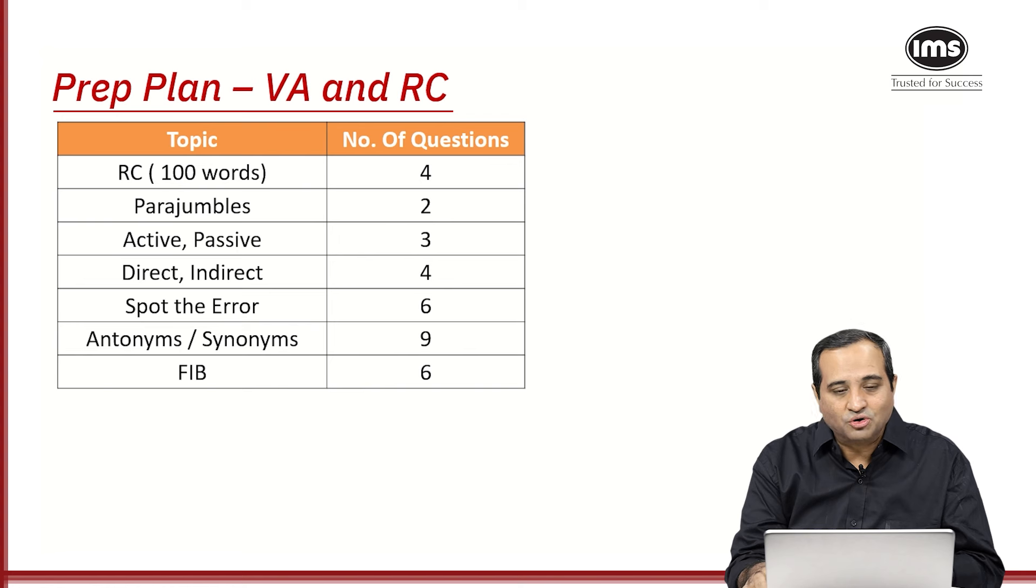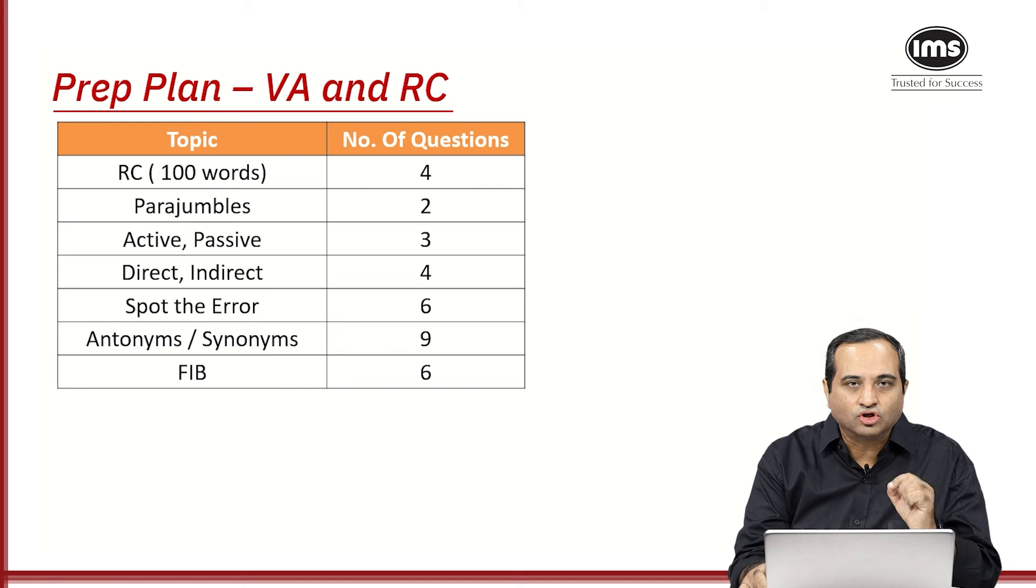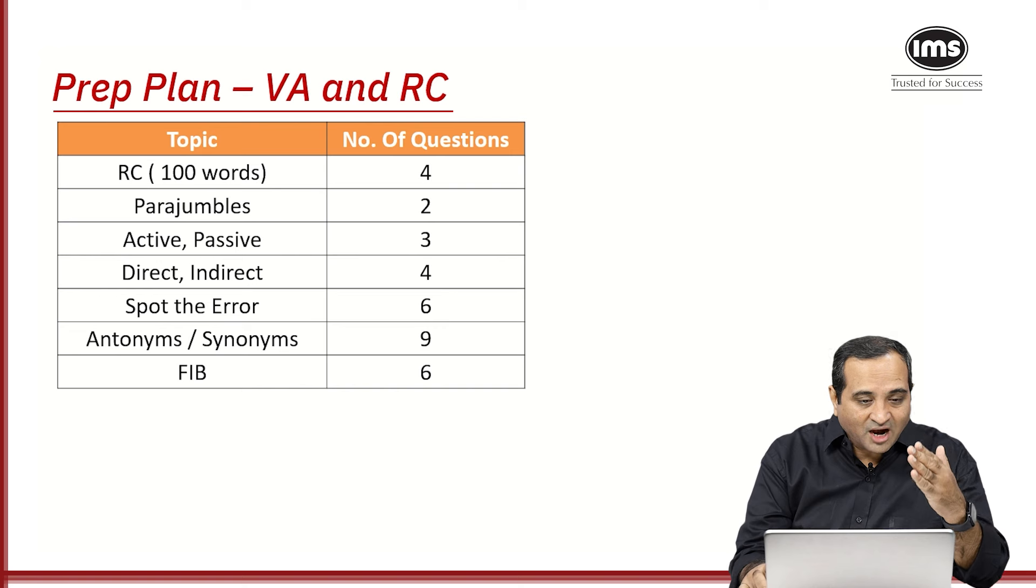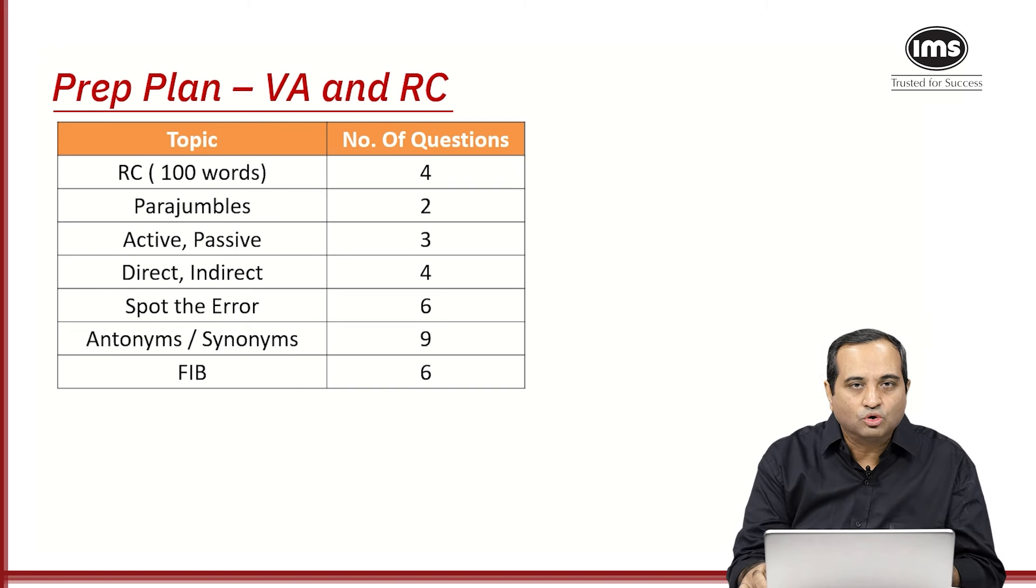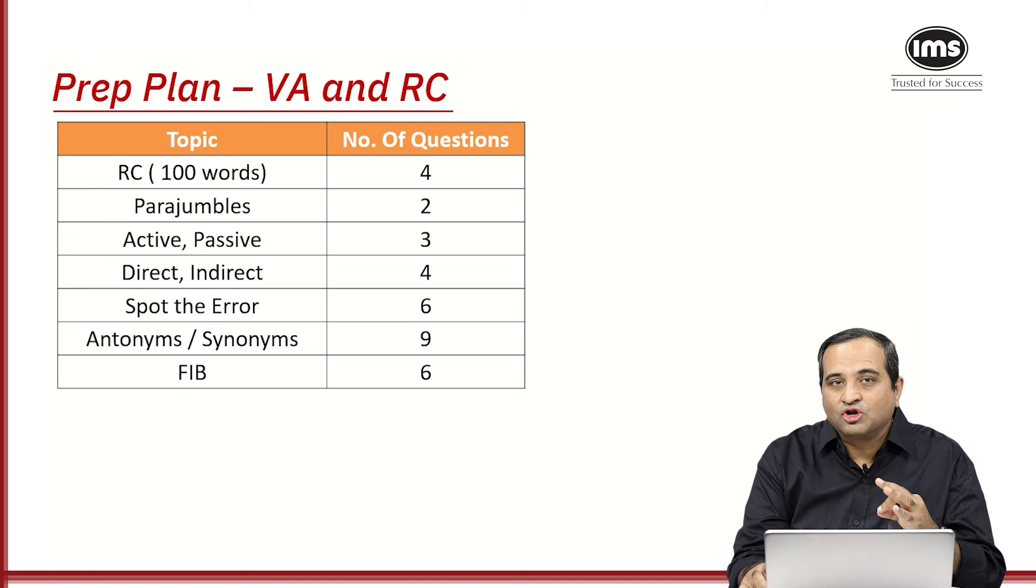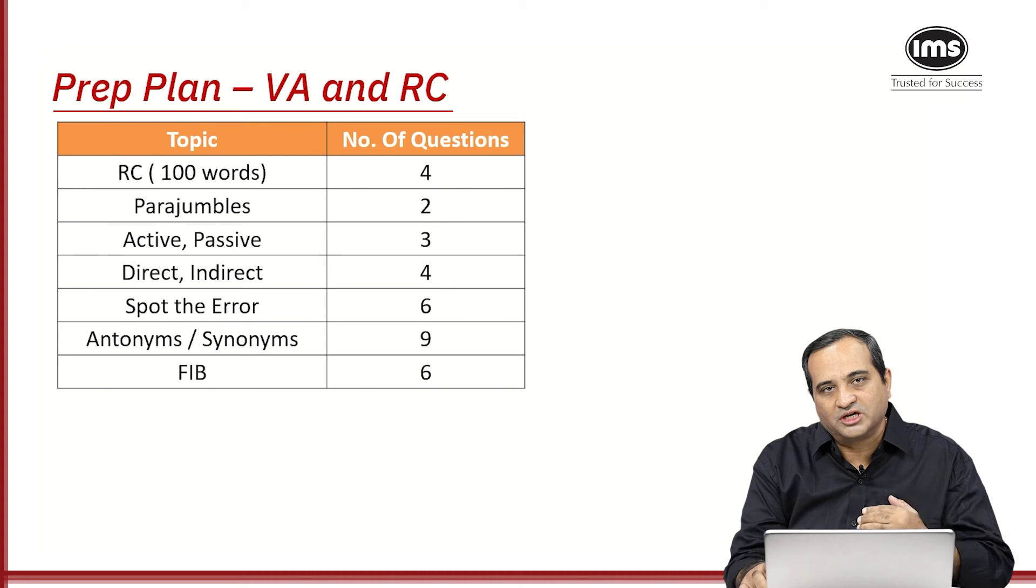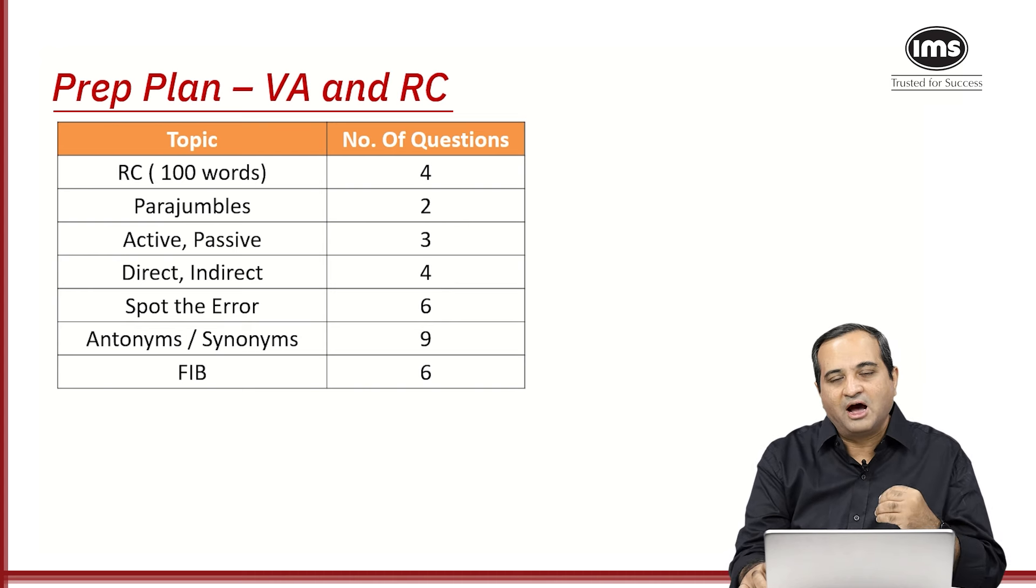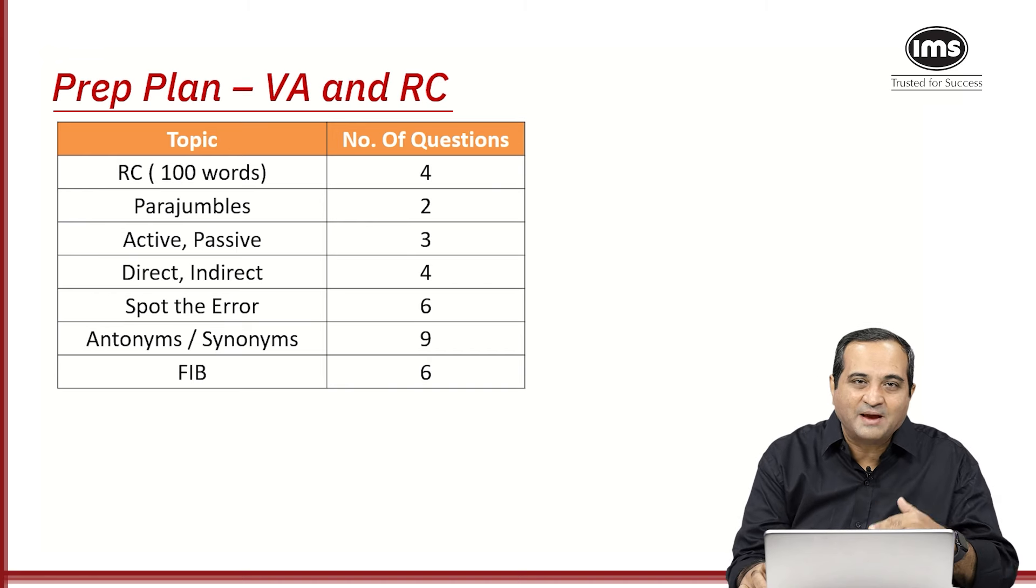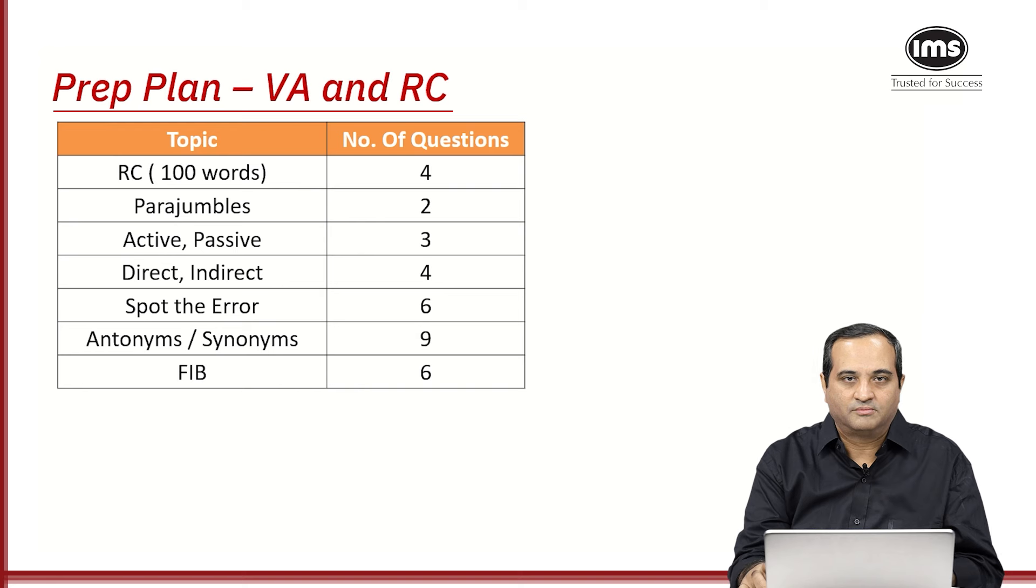This is the topics that you get in verbal. So there is only one RC that you get. That RC is also of approximately 100 words and the number of questions are only four. So if you look at the other type of questions here, what you need to do to prepare for verbal is more of grammar and vocab. Make sure that you have all your grammar rules studied properly. And as far as vocab is concerned, you can't learn vocab in a day or two. It's a continuous process. Hence, make sure if you can learn on an average around 20 words on a daily basis, I'm sure you will be prepared for the type of questions that come at least for JIPMAT.